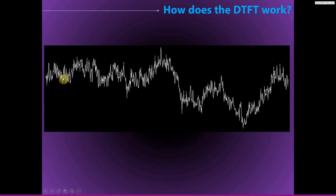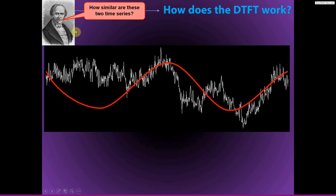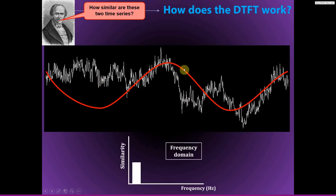Here's how the discrete-time Fourier transform works. You start with your EEG data, which might look something like this. Then you take a sine wave of some frequency — the sine wave has to be as long as the data, so it starts and stops with the data. At each step in the Fourier transform, Fourier asks: how similar are these two time series? We want to know how much of this sine wave is present in our EEG data. We compute some measure of similarity between these two time series and plot it on a frequency domain plot, at a position corresponding to the frequency of the sine wave used. This is one step of the Fourier transform.